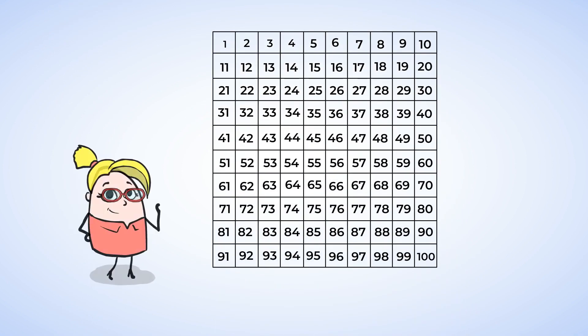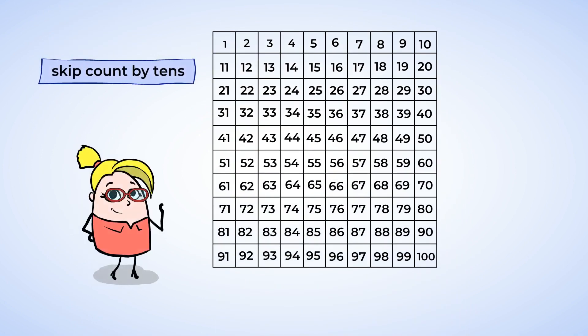A hundreds chart can also help us skip count by tens by looking at the numbers at the end of each row. Each number is just one more group of tens. 10, 20, 30, 40, 50, 60, 70, 80, 90, 100.